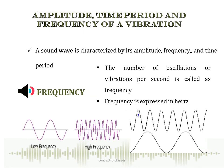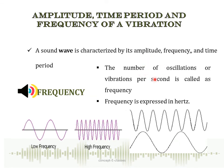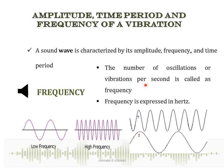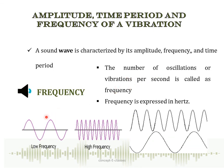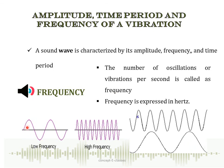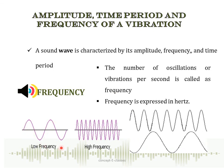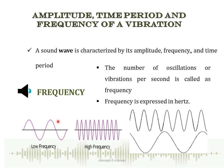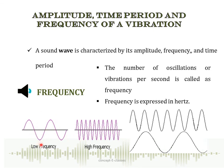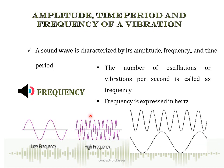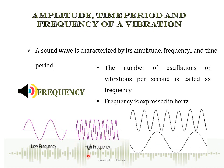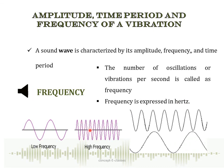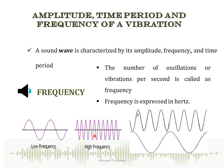The number of oscillations or vibrations per second is called frequency. If fewer vibrations occur in one second, the object has low frequency; if more vibrations occur in one second, the object has high frequency. Frequency is always expressed in hertz. For example, if an object oscillates 10 times in one second, its frequency is 10 hertz.